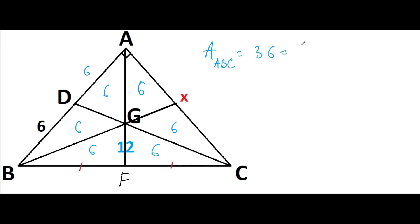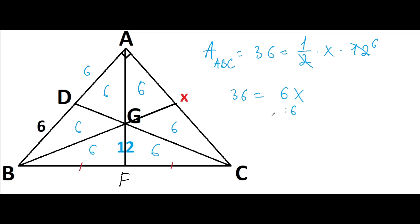This will be equal to one-half times — here we can see the right angle triangle ABC — one-half times x times side AB, which is 12. We can cancel 12 and 2 to get 6. So 36 equals six times x. Dividing both sides by six, we get x equals six.